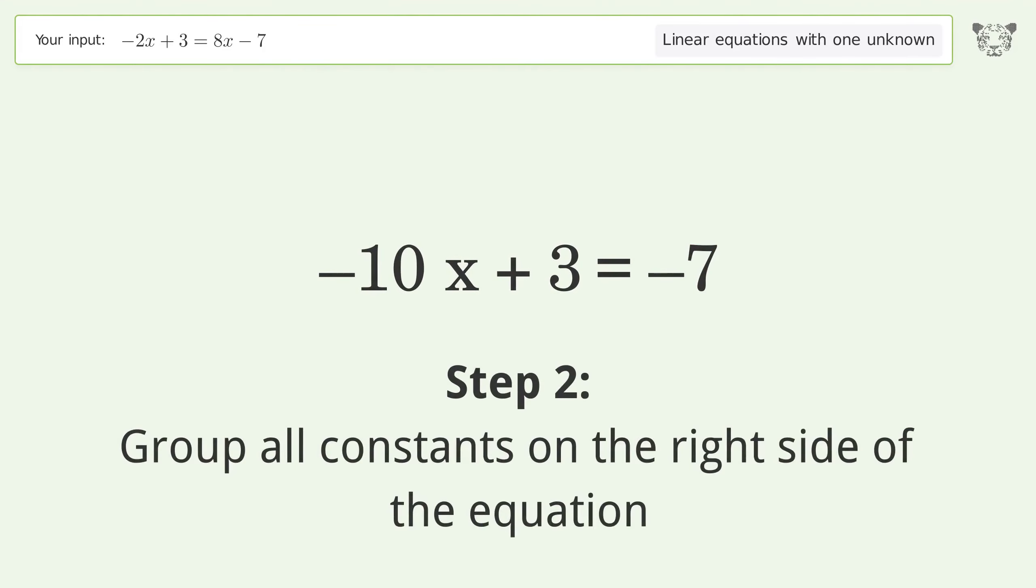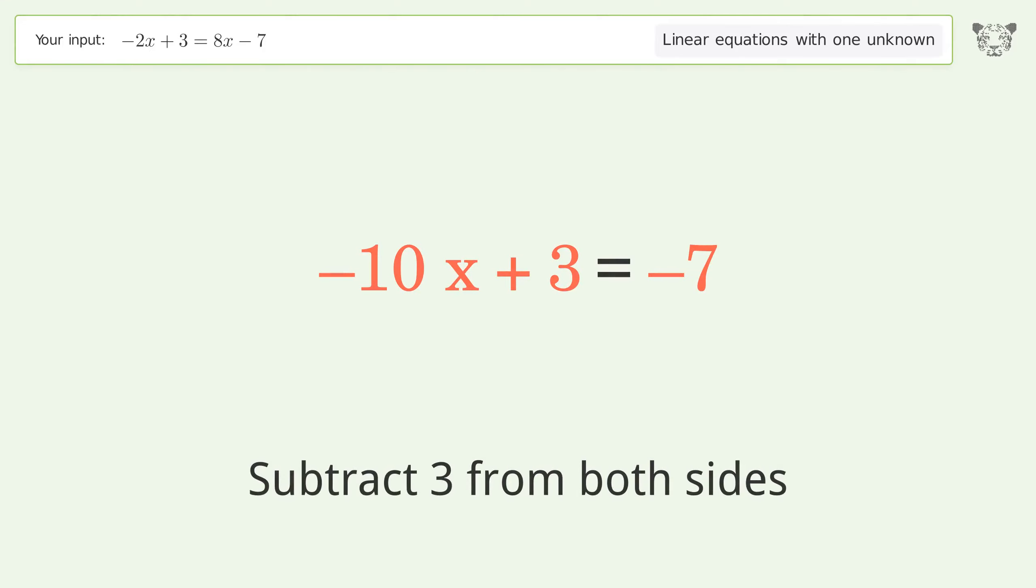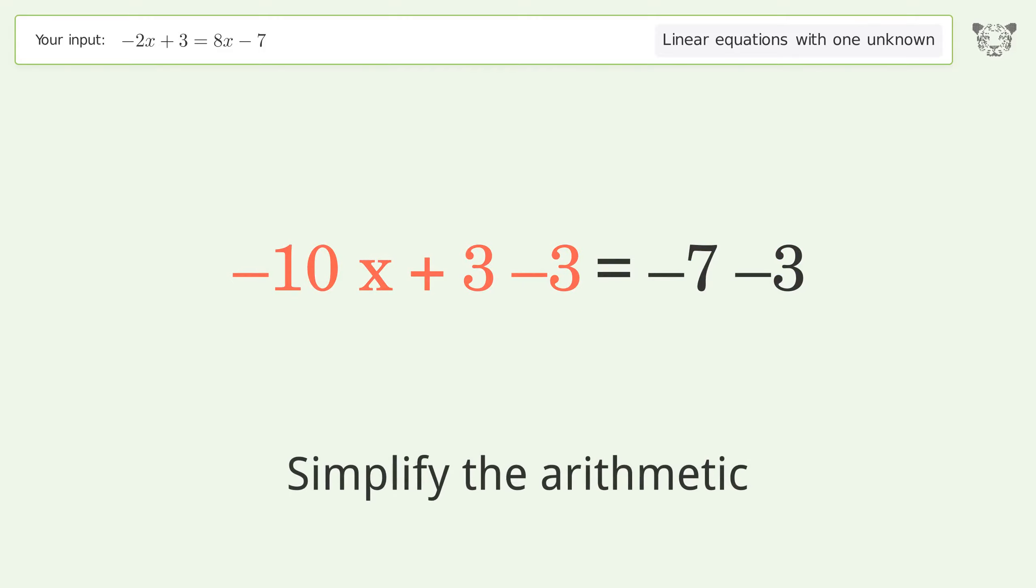Group all constants on the right side of the equation. Subtract 3 from both sides. Simplify the arithmetic.